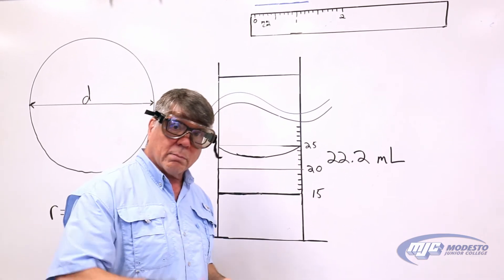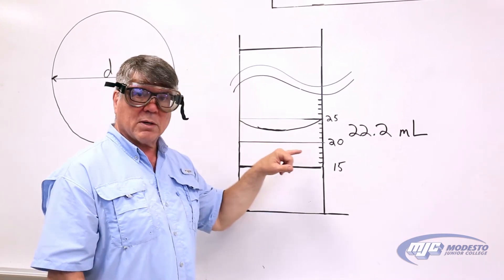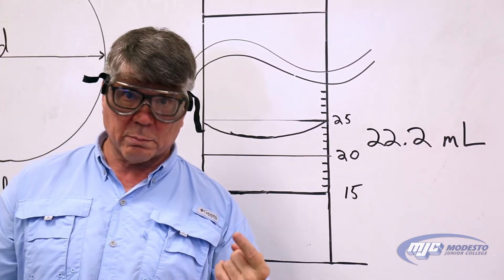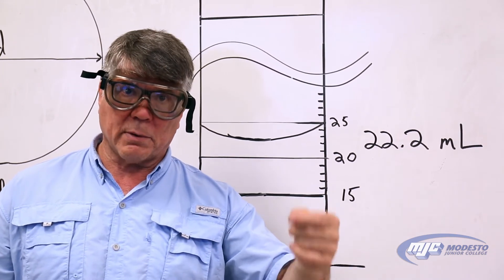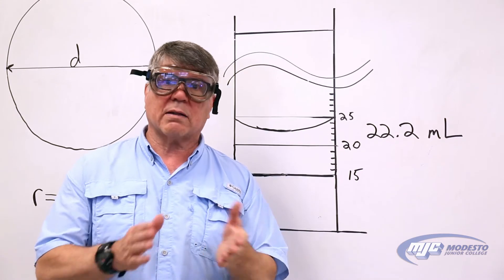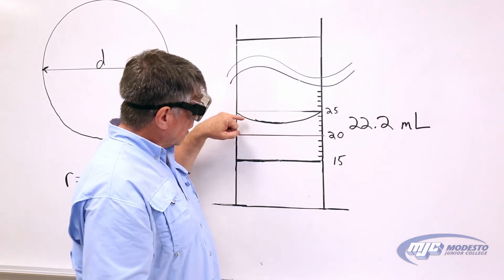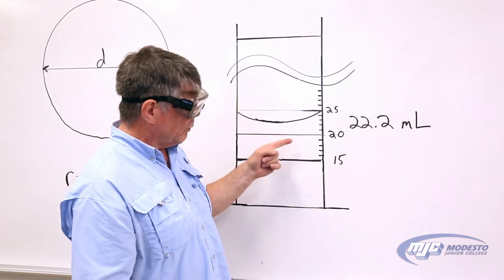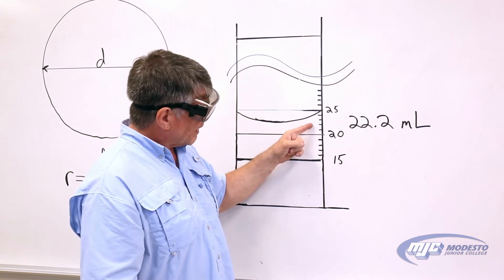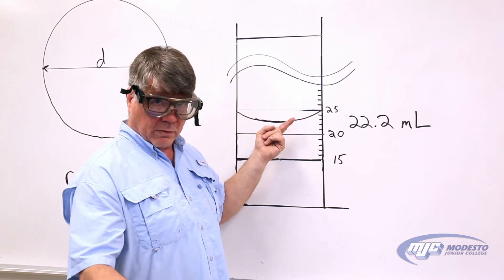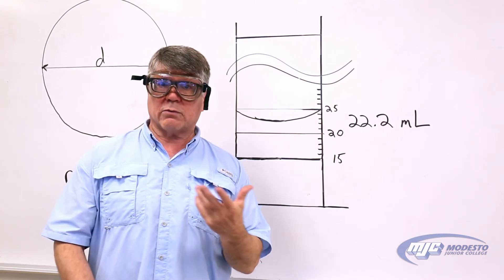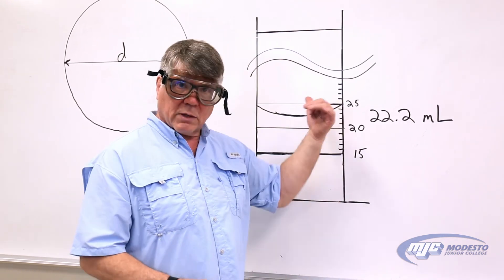For the graduated cylinder used in the metal shot part — Part B — remember we read the bottom of the meniscus. The closest marks are one milliliter apart, so we record measurements one more place to the right, to the tenths place — a tenth of a milliliter — and it's understood that the tenths digit is estimated. For example, if the bottom of the meniscus is between 22 and 23 milliliters, we estimate to the tenths place. I'd say about 22.2 milliliters, but 22.3 or 22.4 would also be acceptable.